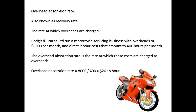We will look at a simple example of this. A motorcycle servicing business has overheads of 8,000 a month and direct labor costs of 400 hours per month. The rate at which these costs are absorbed is determined by dividing the total overhead cost by the direct hours. In this case, 8,000 divided by 400 is equal to $20 an hour.